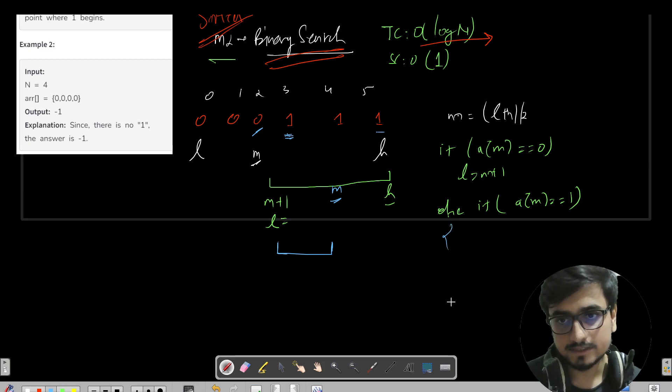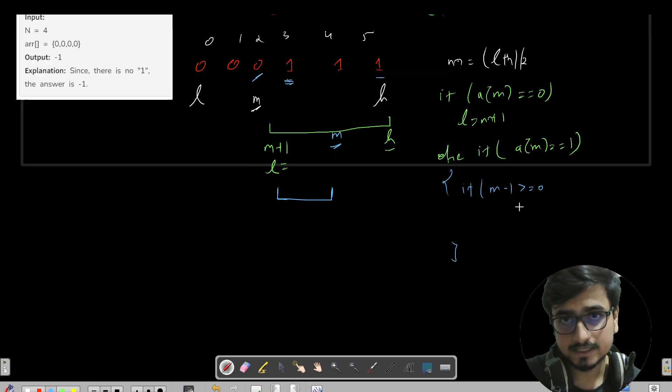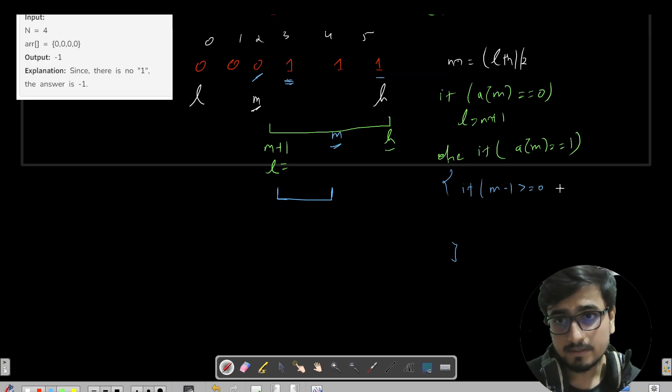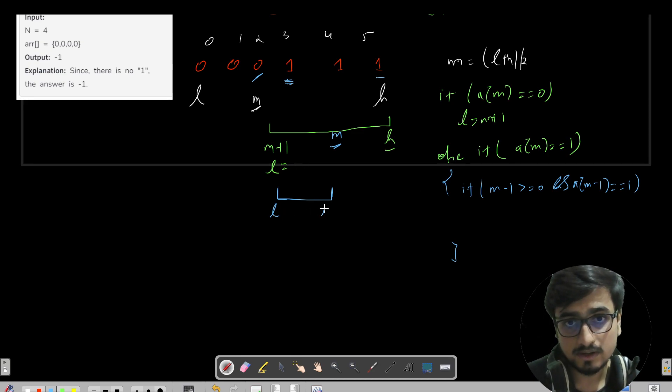Okay, so what are we checking? Here we have two cases. If m minus 1 - so first of all, if you're doing m minus 1, let's keep it safe, let's first check that it should not be out of bound. If m minus 1 greater than zero and array of m minus 1 is equals to one, then definitely we need to make a binary search for the left side. Your updated l would remain same, your high would be updated to m minus 1.